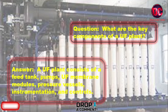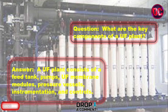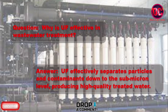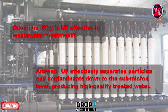What are the key components of a UF plant? A UF plant consists of a feed tank, pumps, UF membrane modules, pressure vessels, instrumentation, and controls. Why is UF effective in wastewater treatment? UF effectively separates particles and contaminants down to the submicron level, producing high-quality treated water.